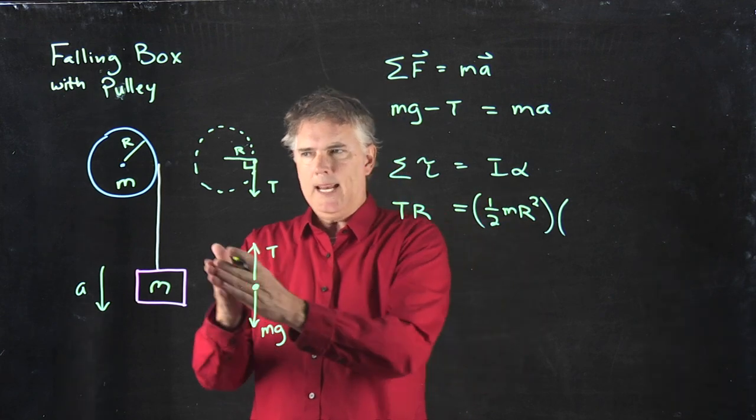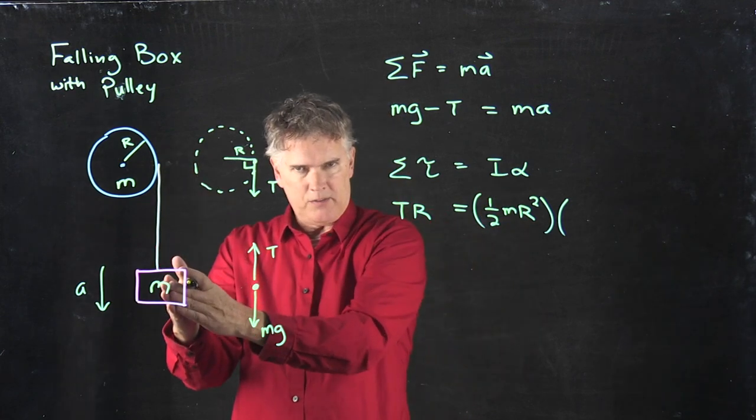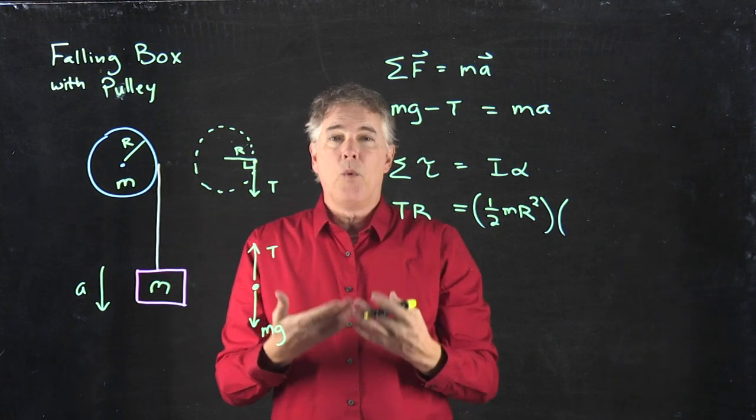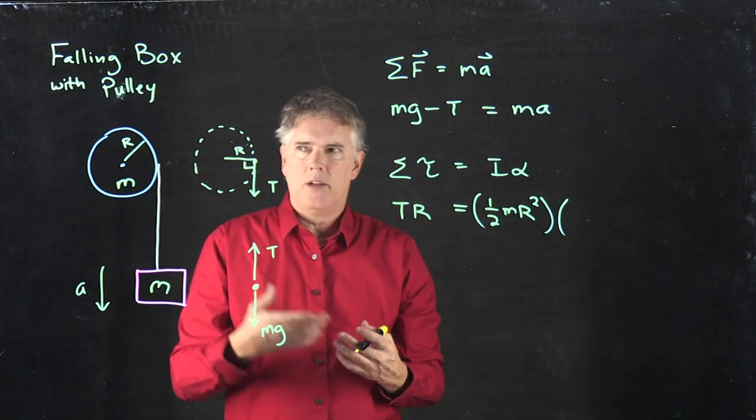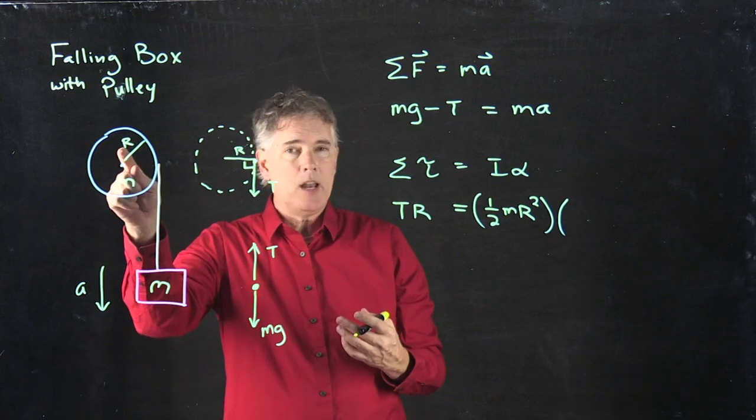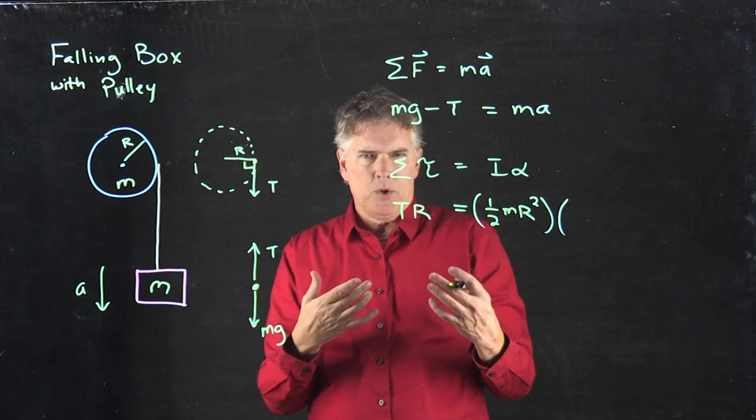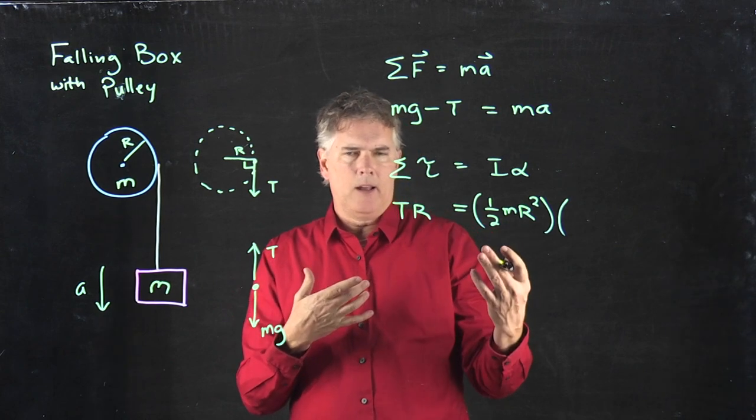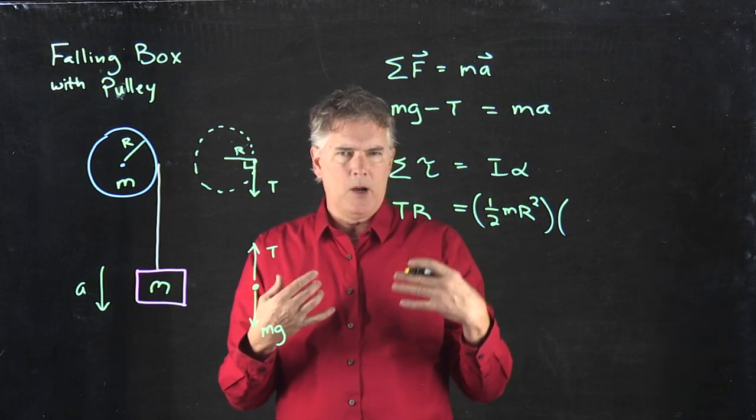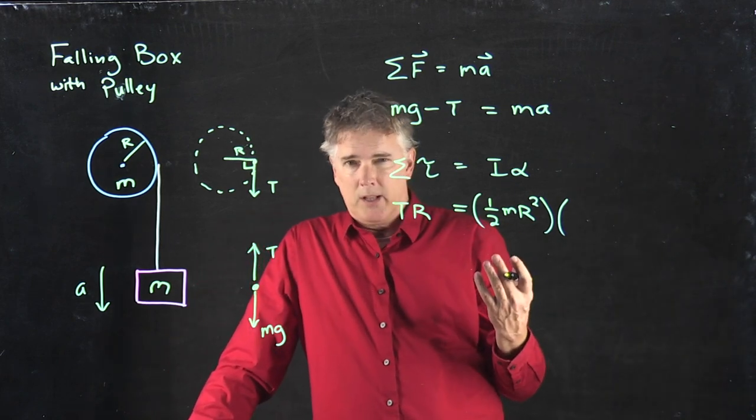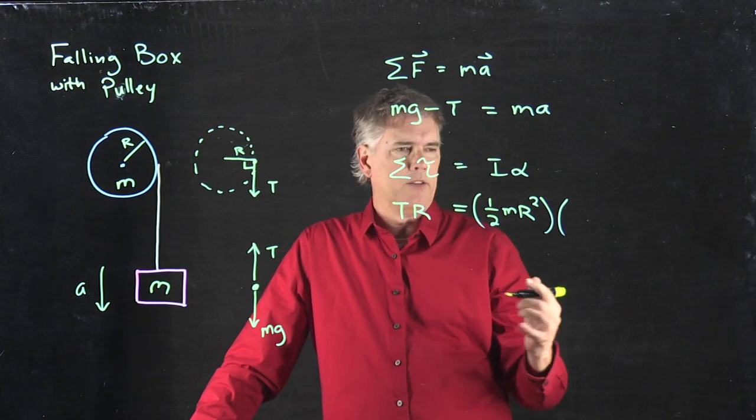Alpha is related to the linear acceleration because it's tied together with a rope. And the way it's related is A and R, the radius. And so you might not remember which way it goes. Does A multiply R? Is it A over R? But you know it's one of those. And you can really quickly figure it out just from unit analysis.